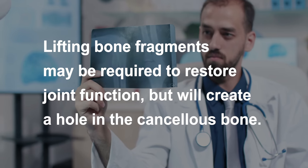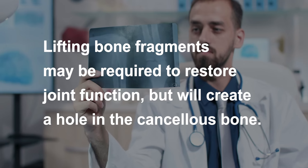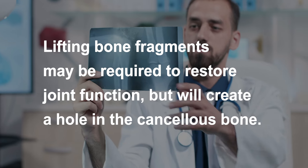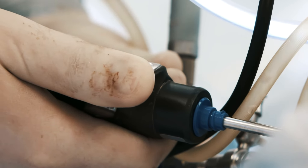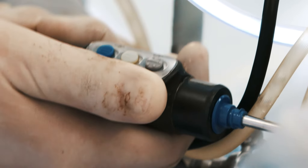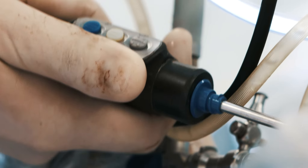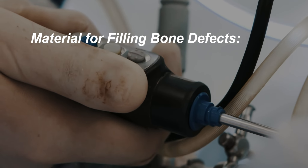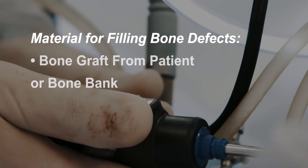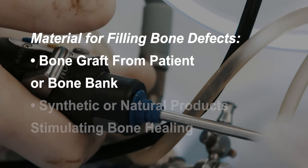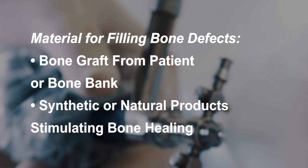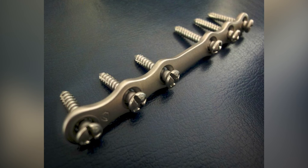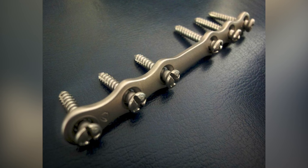Lifting these fragments, however, creates a defect or hole in the cancellous or crunchy bone of the region. This defect must be filled with material to keep the joint from collapsing. This material can be a bone graft from the patient or from a bone bank. Synthetic or naturally occurring products which stimulate bone healing can also be used. To further stabilize this area, a plate with screws is applied.